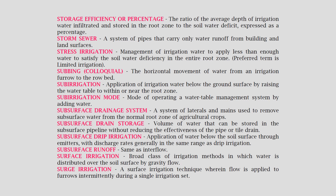The preferred term for stress irrigation is limited irrigation. Subbing: colloquially, the horizontal movement of water from an irrigation furrow to the row bed. Sub irrigation: application of irrigation water below the ground surface by raising the water table to within or near the root zone. Sub irrigation mode: mode of operating a water table management system by adding water.